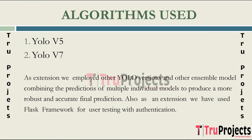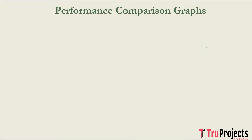As an extension, we employed other YOLO versions and ensemble models — combining predictions of multiple individual models — to produce a more robust and accurate final prediction. We also used the Flask framework for user testing with user authentication. To evaluate this project, we used accuracy, precision, recall and F1 score as the performance metrics.